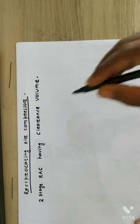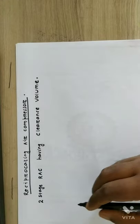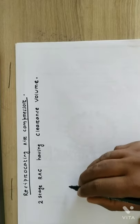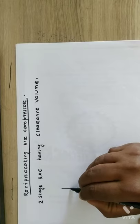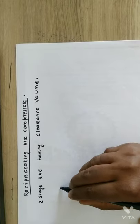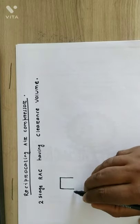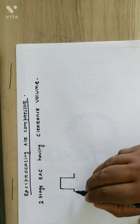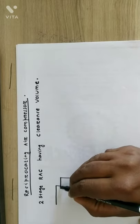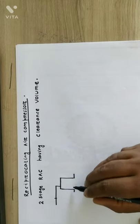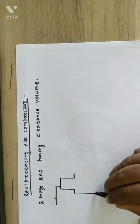First, we will know the block diagram, and after getting the block diagram, we can go for the indicator diagram. So let it be — this is the first stage compressor. The mass induction to this is mounted over some kind of storage tank.